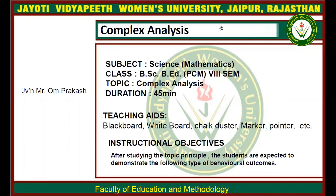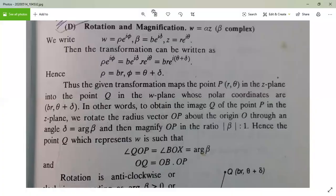Today we see the combined effect of rotation as well as magnification. In rotation as well as magnification, we see that the transformation will be taken as ω = αz·β complex. We can write ω = ρe^(iφ), β = Be^(iδ), and z = Re^(iθ). Then the transformation can be written as ρe^(iφ) = Be^(iδ) · Re^(iθ) = BRe^(i(θ+δ)).